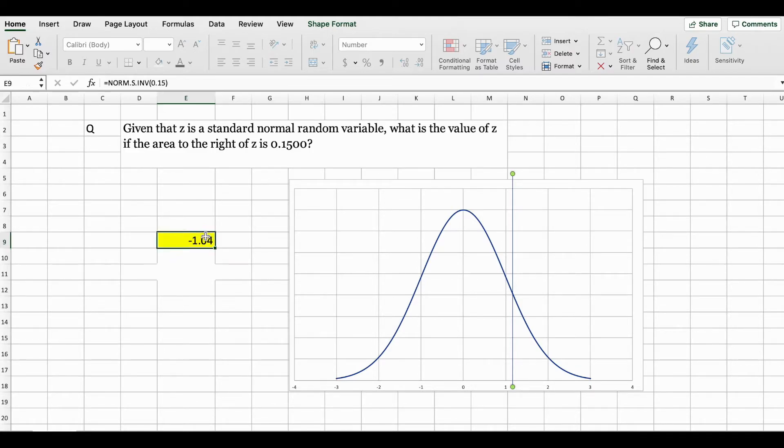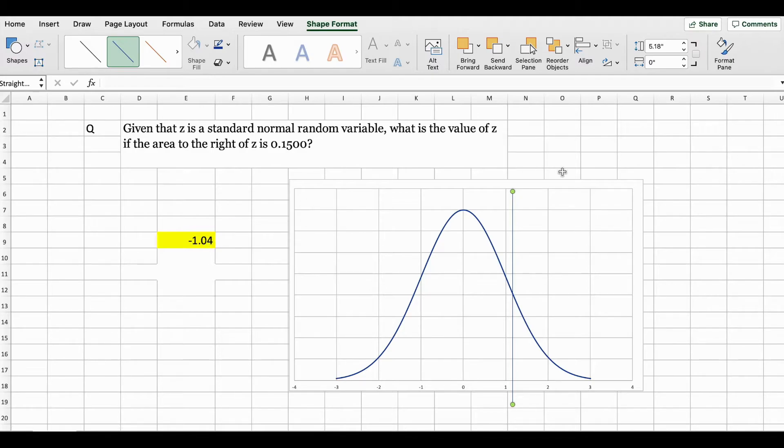Now you need to be careful with the negative and the positive sign. If we were to use this value, it would tell us that negative 1.04 is right here, but the right side is not equal to 0.1500. So here the question is telling us that the area on the right side is 0.1500. So instead of negative, it should be positive 1.04 because the right side of 1.04 is 0.1500.